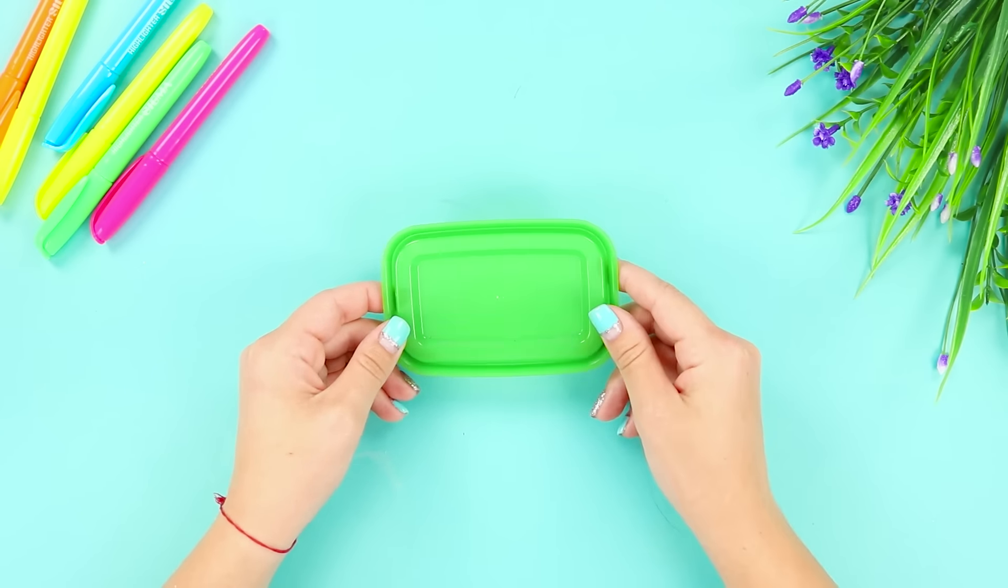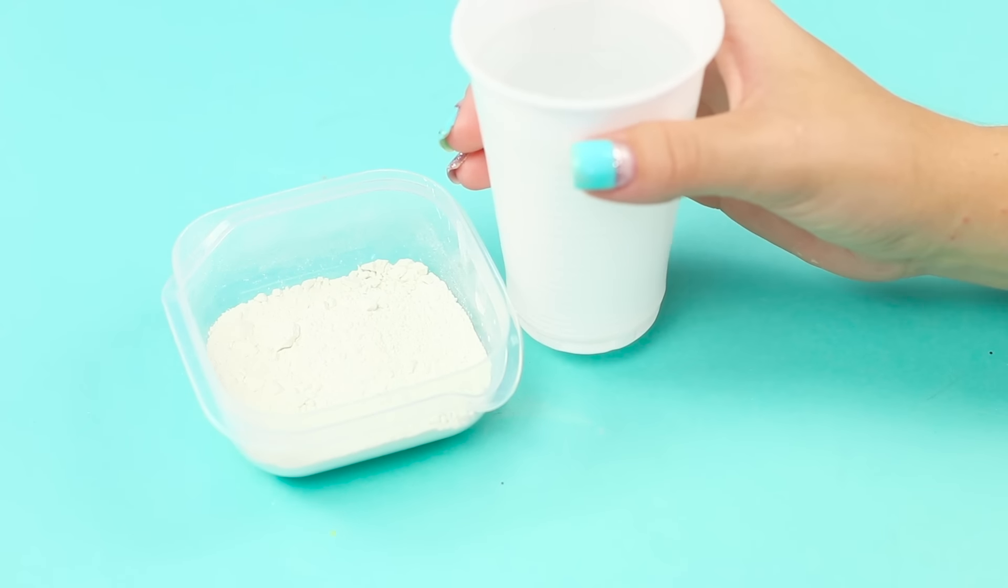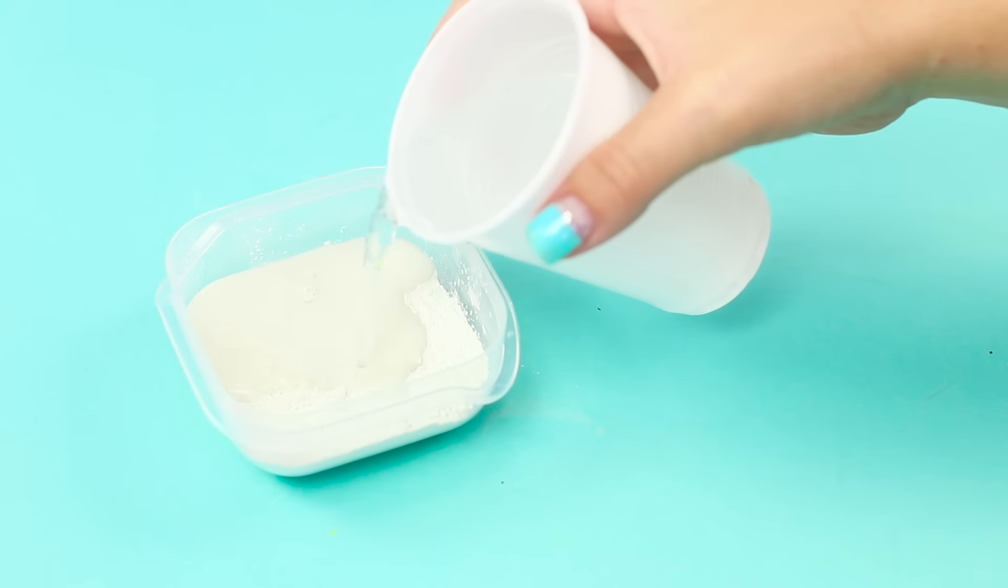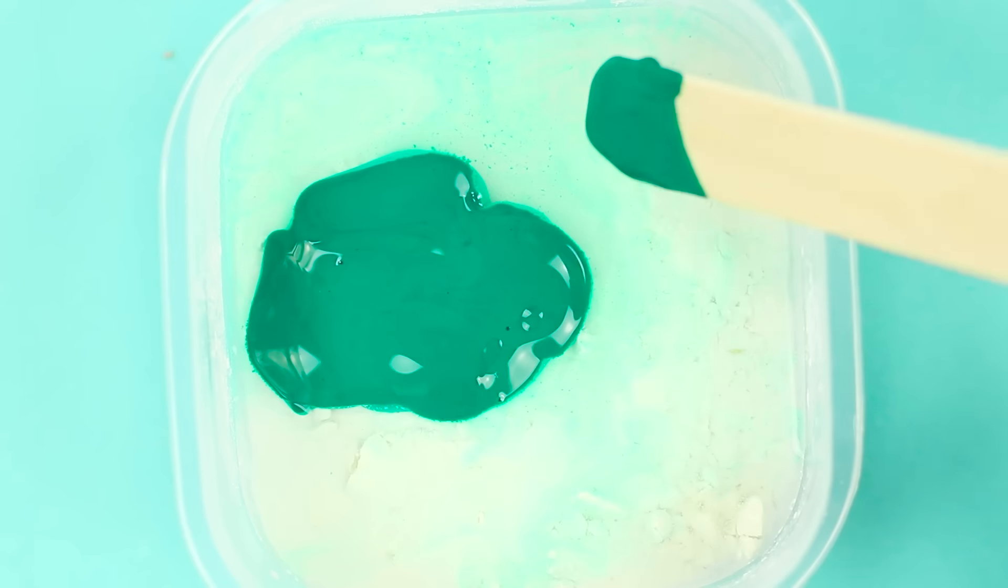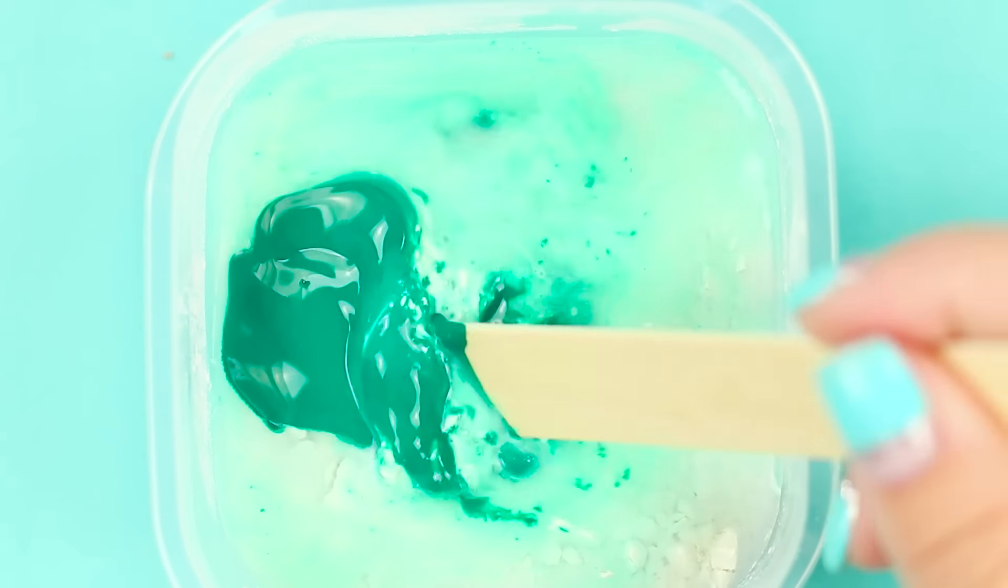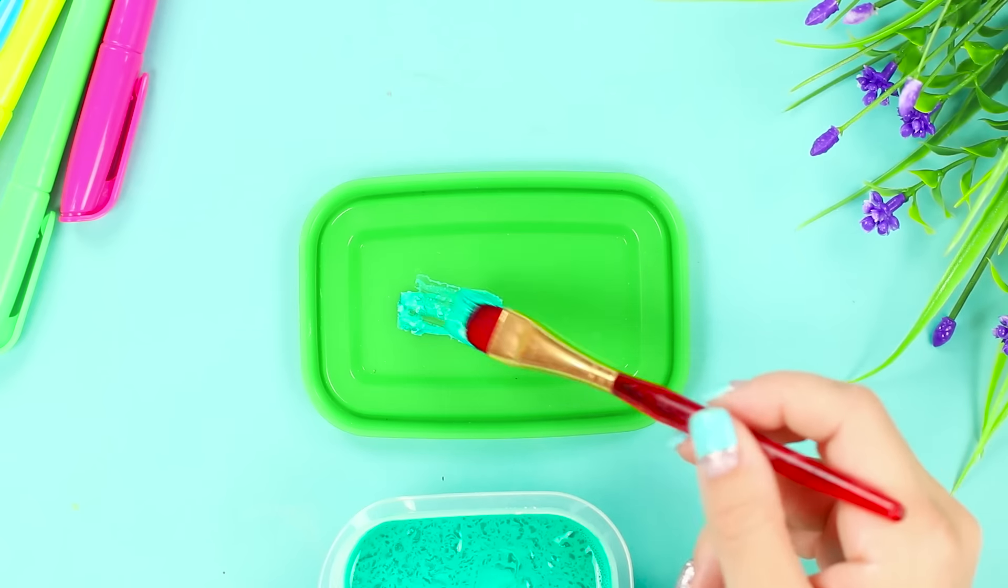For this idea, take a plastic lid, plaster powder, and water. Pour water into the plaster. Add some green paint to it. Mix everything with a wooden stick. Fill the lid with the mixture.